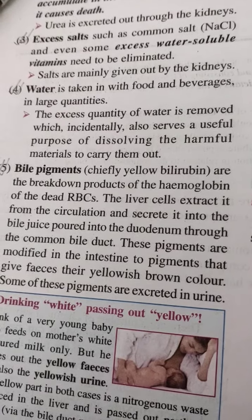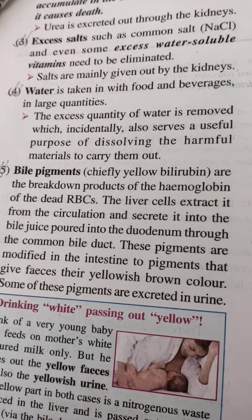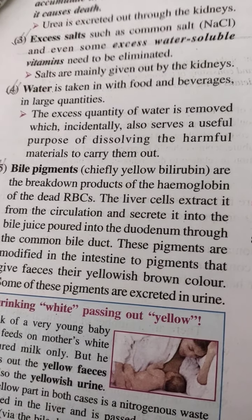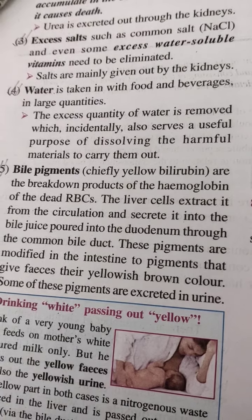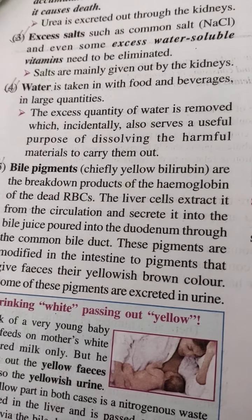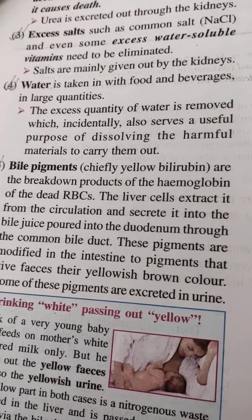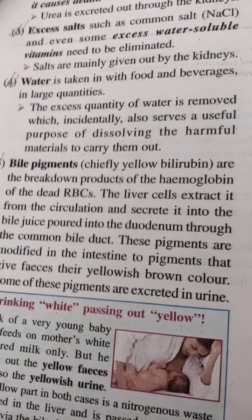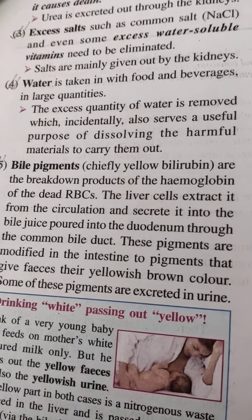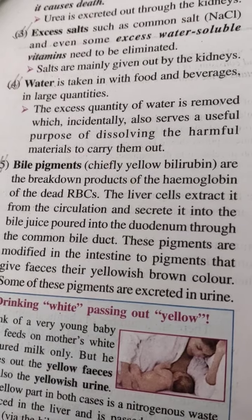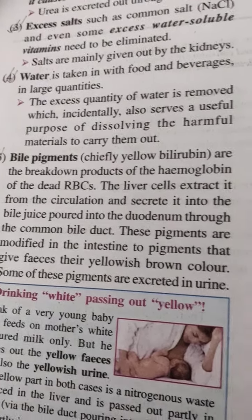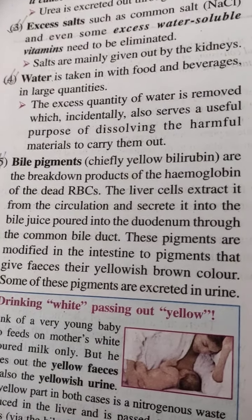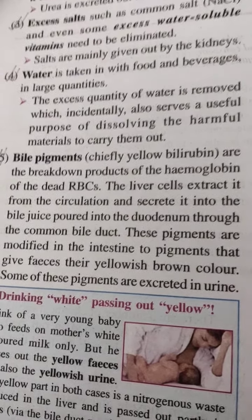Next are bile pigments, which are yellow in color and are the breakdown products of hemoglobin from dead RBCs. The liver cells extract these from the circulation and secrete them into bile juice, which is poured into the duodenum through the common bile duct. These pigments are modified in the intestine to give feces their yellowish-brown color, and some are also excreted in the urine — which is why urine can appear yellowish.